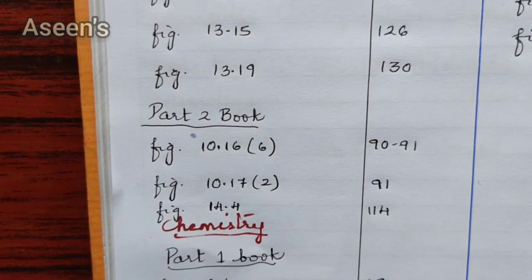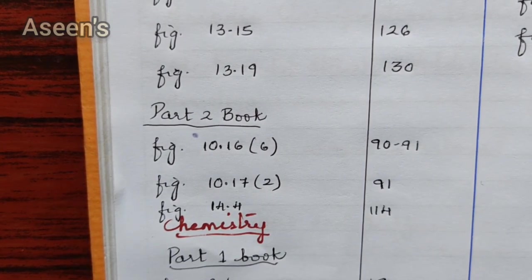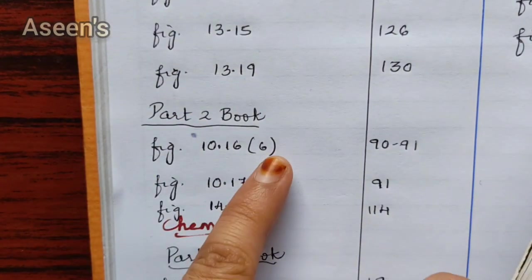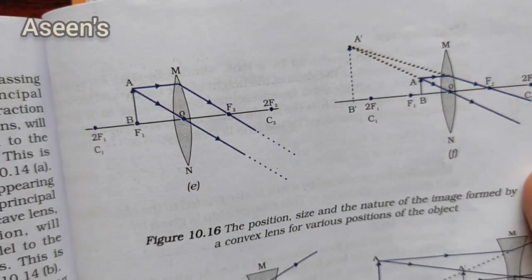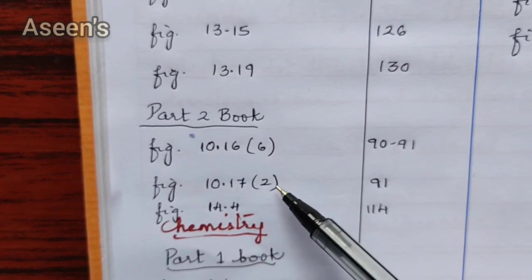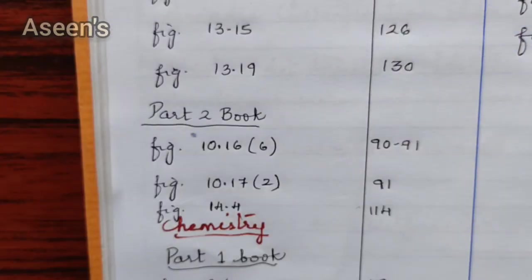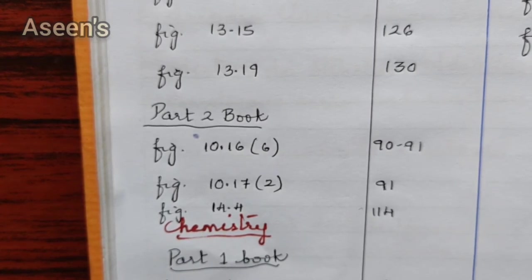From Part 2 book for physics, the first diagrams are on pages 90 to 91 — these are ray diagrams. Figure 10.16 has six diagrams: four on one page and two on the next. Then Figure 10.17 has two diagrams on page number 91, for concave lenses. That covers all physics diagrams. For chemistry, there are no diagrams from Part 2 book — only from Part 1 book.